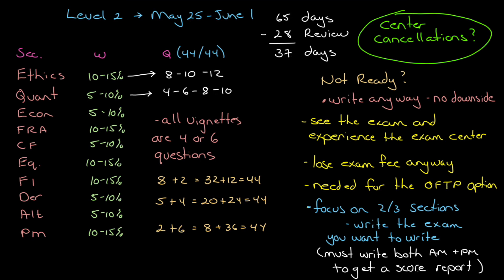Okay, we're coming up on the May exam for level 2, 65 days to go, and I've reduced that by 28 days for your review. You've got 37 days to get through what you need to get through, and then you should be in review mode or final consolidation mode.